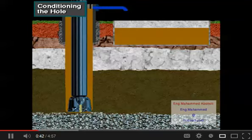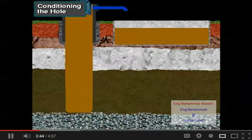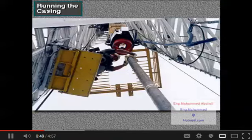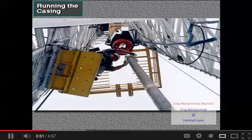Then the crew pulls the drill string out of the hole. The next step in primary cementing is for the casing crew to run the casing into the well, one joint at a time.